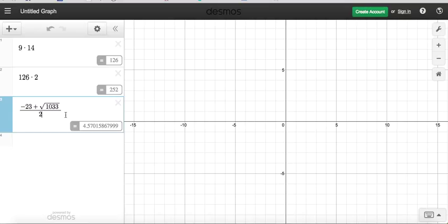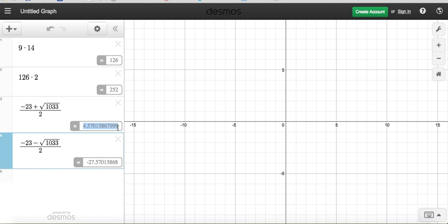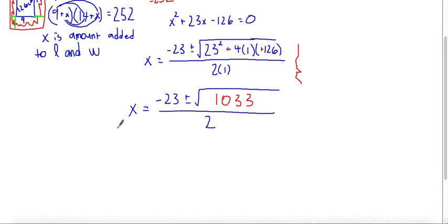So one answer could be 4.5. The other answer could be minus the square root of 1033 divided by 2. Obviously a negative amount added to both sides wouldn't make sense. So our answer is about 4.57 centimeters, which we can round up to 4.6. So yeah, we got x was approximately 4.6 centimeters or negative 27.5. But this answer doesn't make sense.